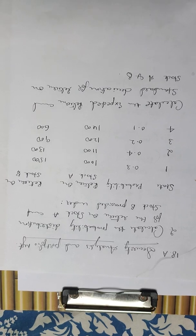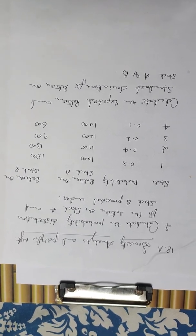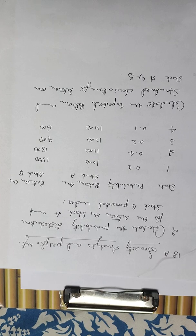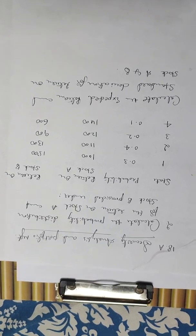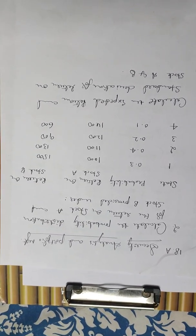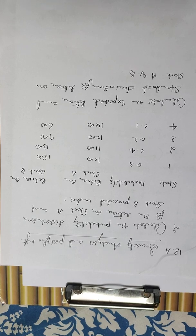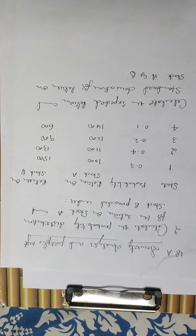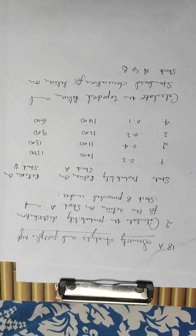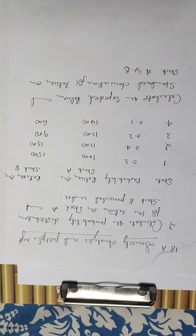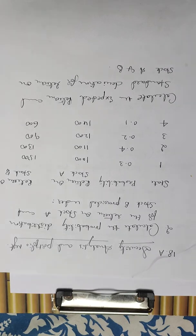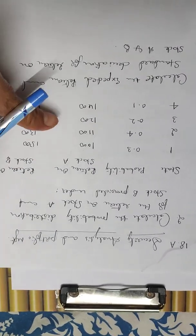The data is: States 1, 2, 3, 4 with probabilities 0.3, 0.4, 0.2, 0.1. Return on stock A: 1000, 1100, 1200, 1400. Return on stock B: 1500, 1300, 900, and 600. We need to calculate the expected return and standard deviation for stock A and stock B.